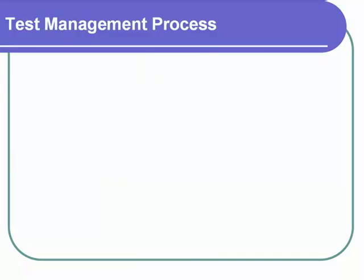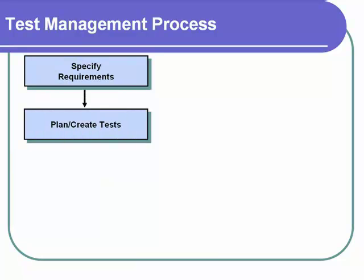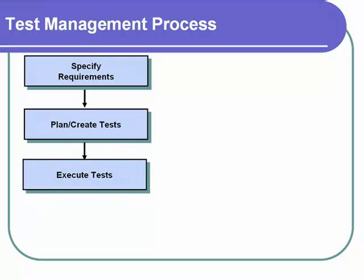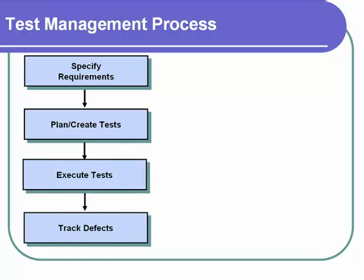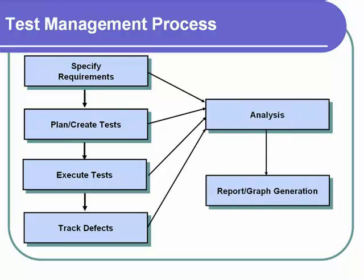The test management process begins with specifying the requirements. Based upon the requirements, test plans are created. The next stage is executing the created test plans, followed by tracking and fixing the defects detected in the execution stage. During all four stages, analysis is done and reports and graphs are generated based on the analysis.